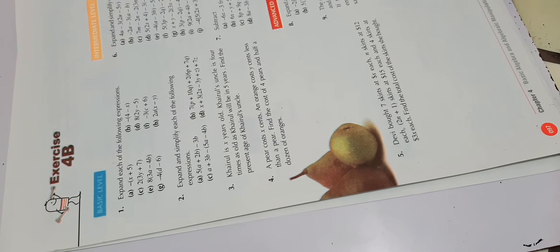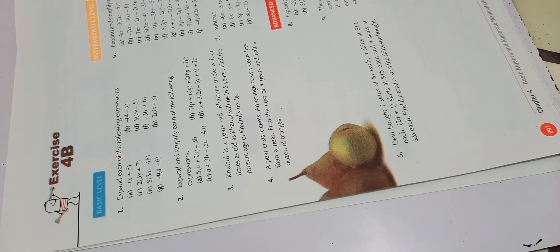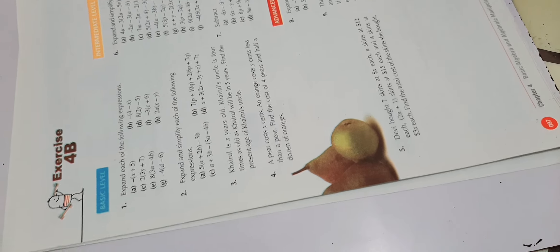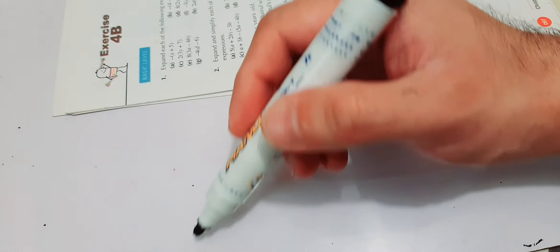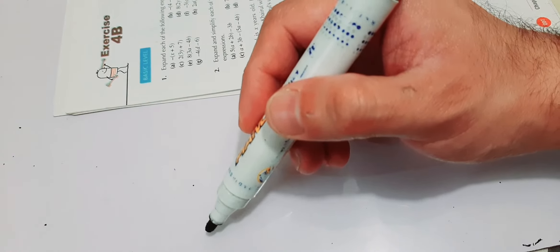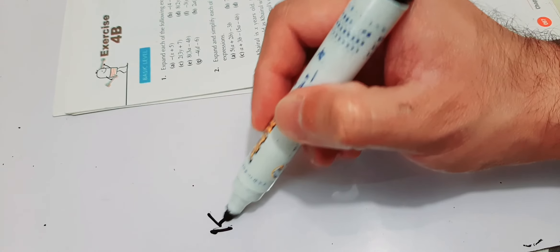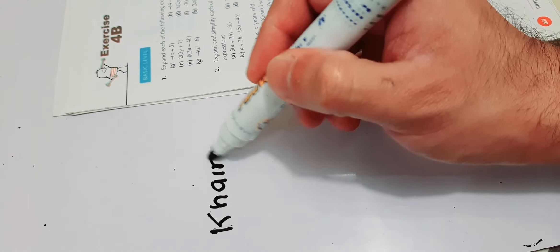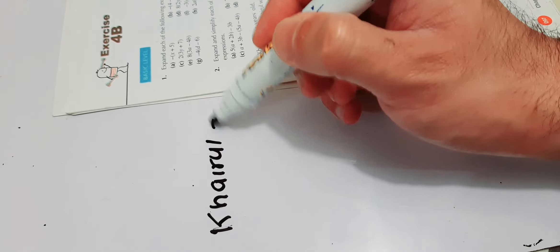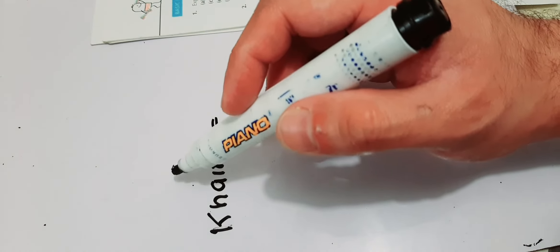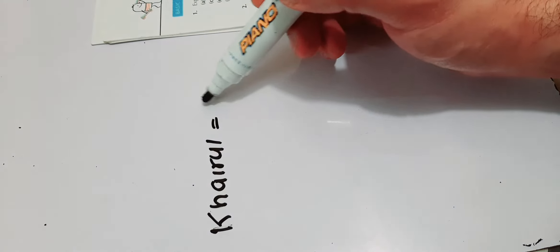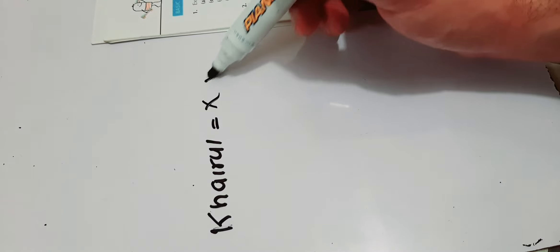Question number 3 is: Khairul is x years old. First of all, you can write over here that Khairul's age is x years.